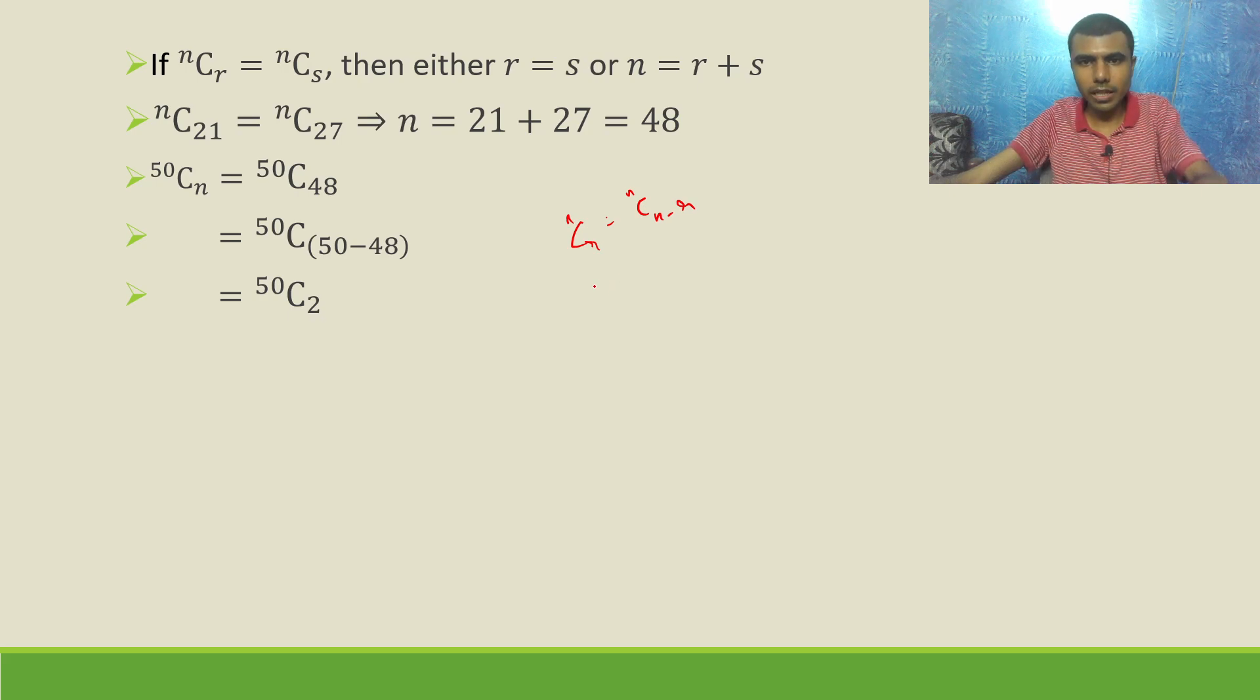ⁿC₂ is nothing but n(n-1)/2!. It's a product of two terms in the numerator, and in the denominator I have 2 factorial.